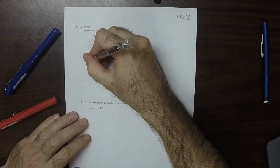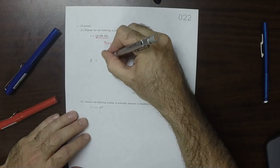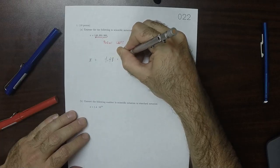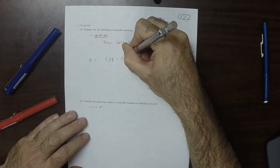That means the number x could be written as 1.48 multiplied by 10 to exponent 8.